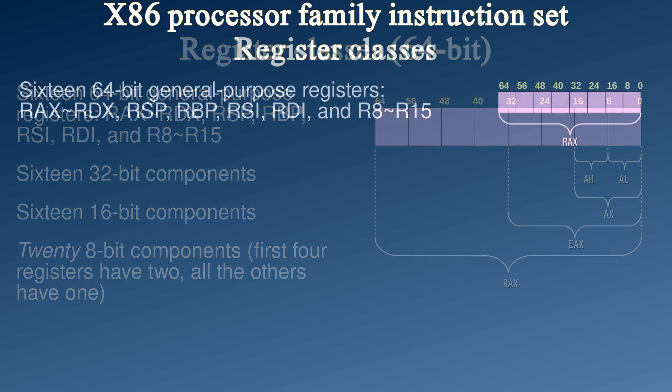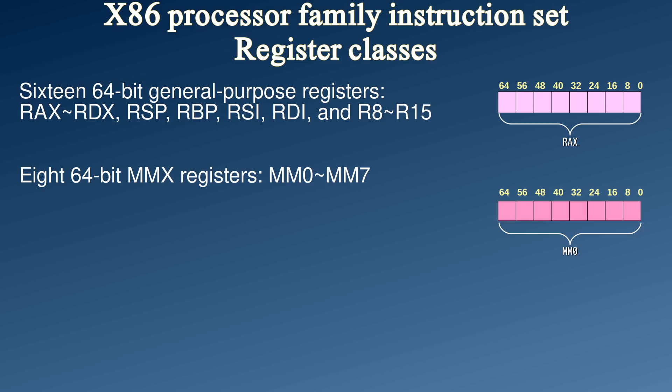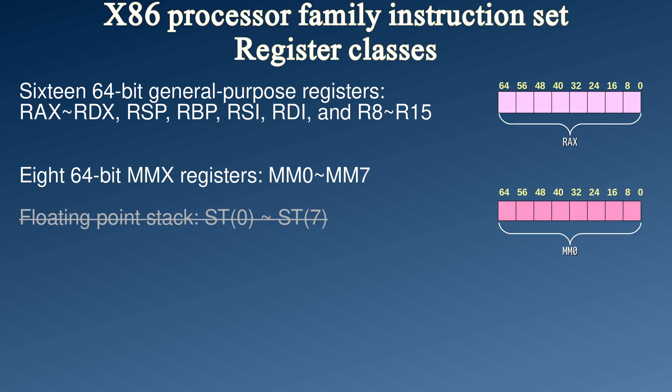And that's where we are now. You have 16 64-bit registers. You already know the names of the first eight of them — AMD added 8 more, which are called R8 through R15. Besides the 16 general-purpose registers, there are also 8 MMX registers, each of which are 64-bit wide. They are actually aliases to the floating-point register stack, which is 80 bits wide, but we don't speak about the floating-point register stack anymore.